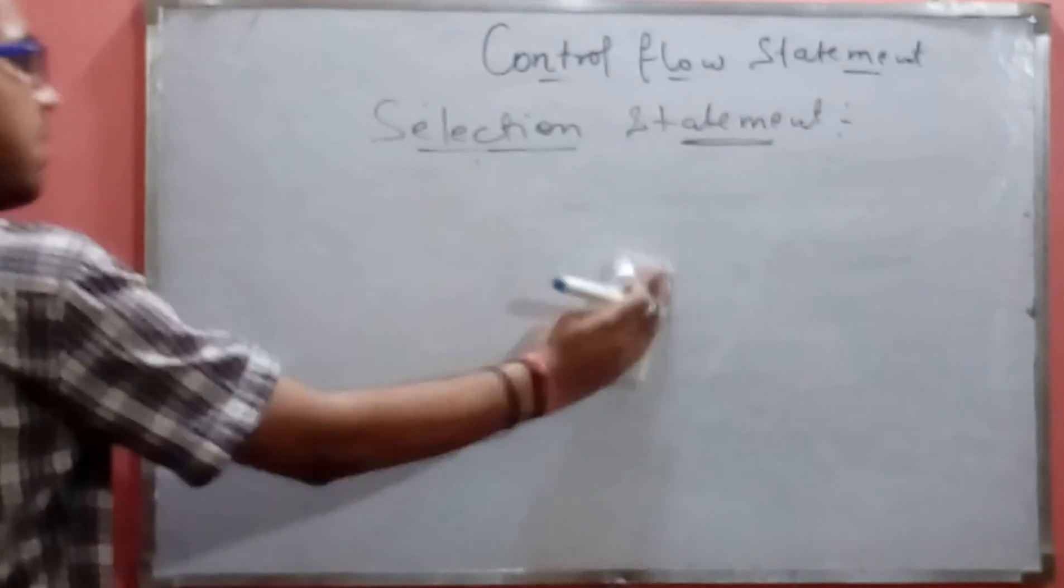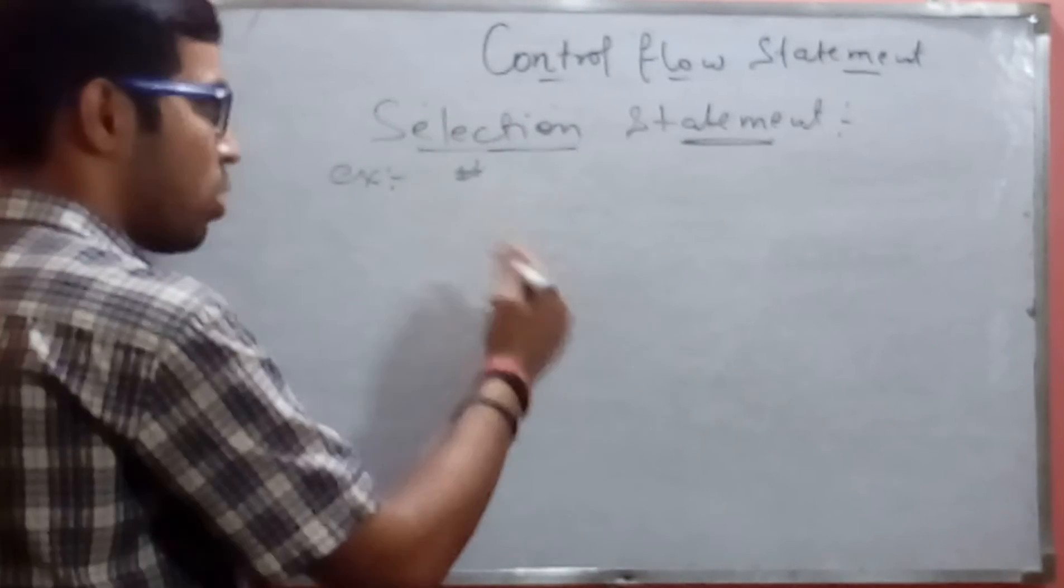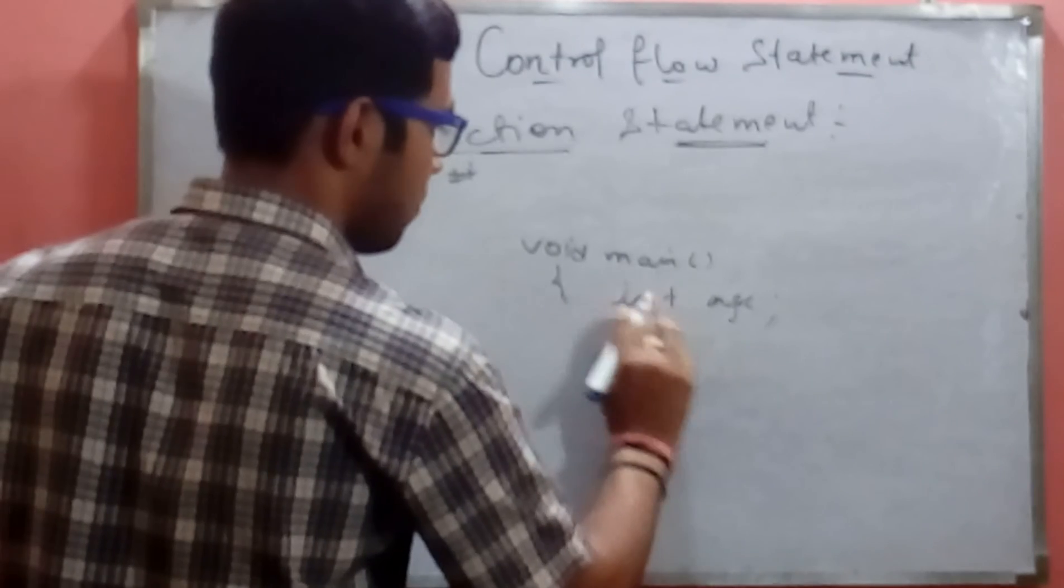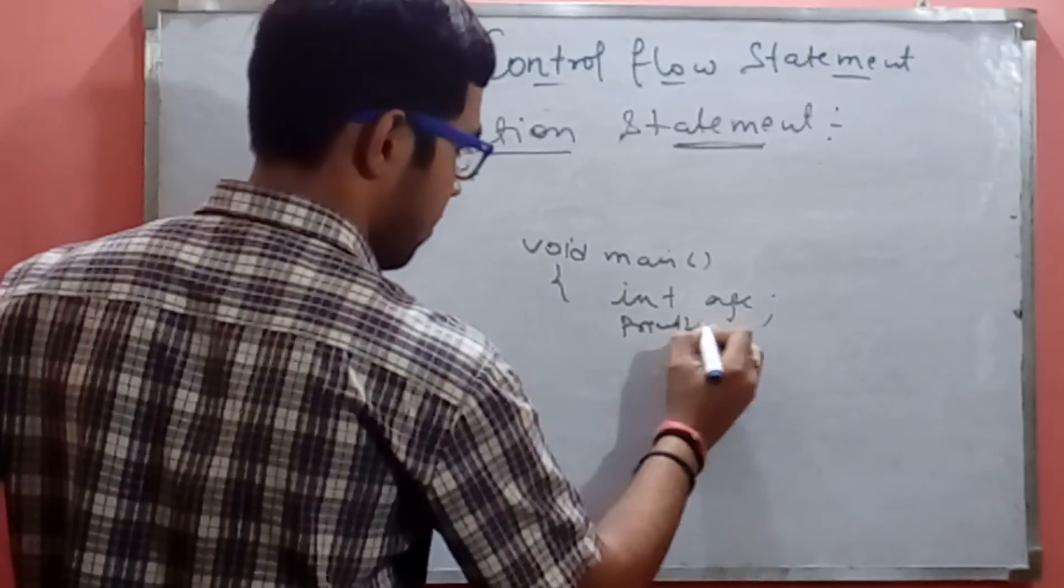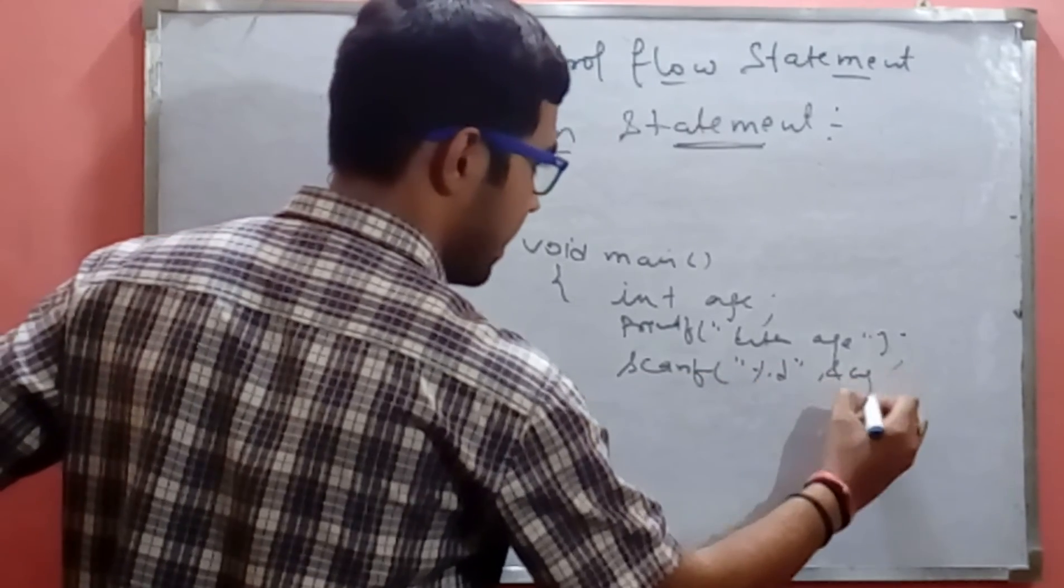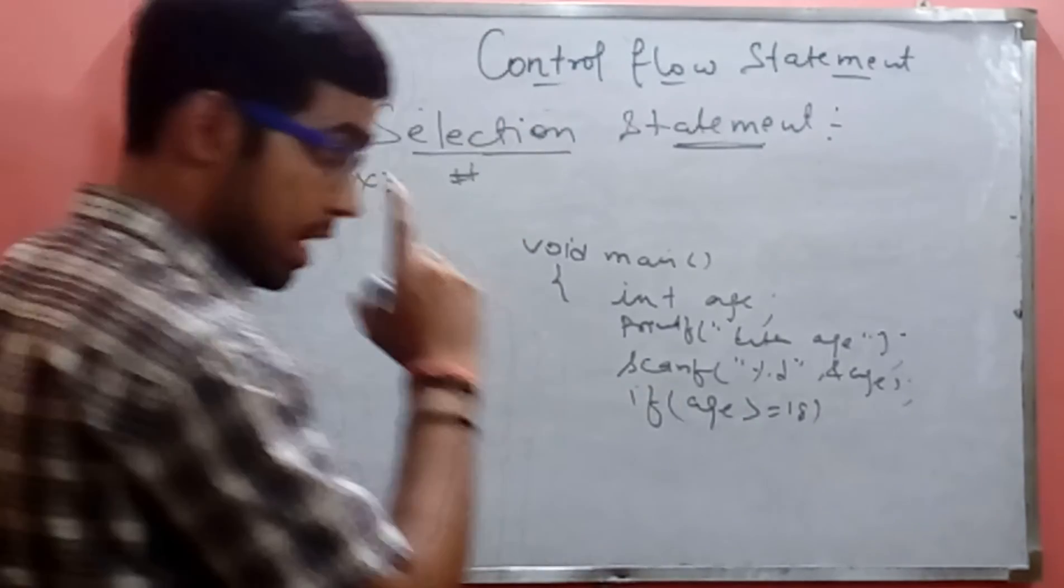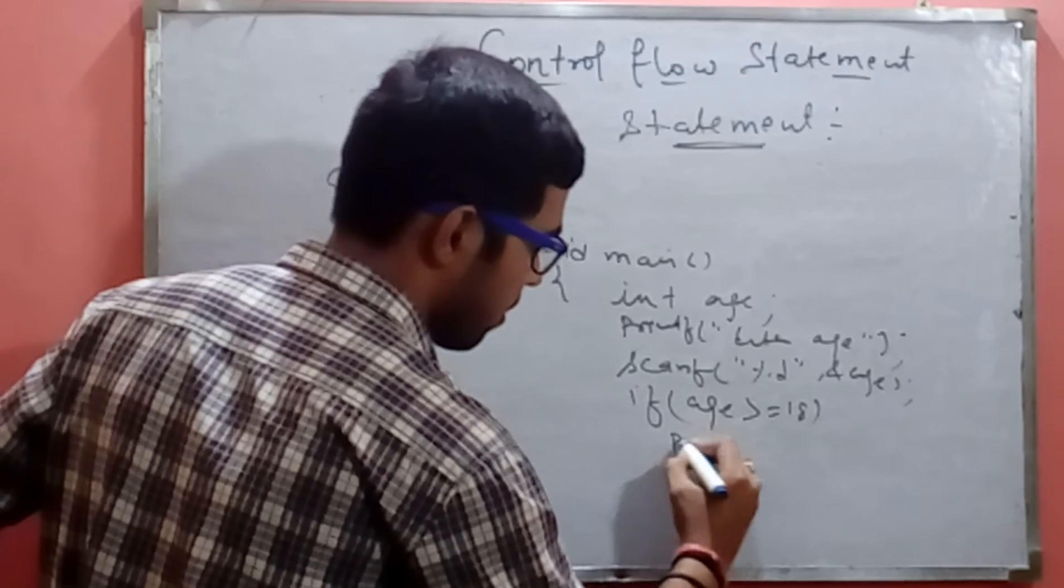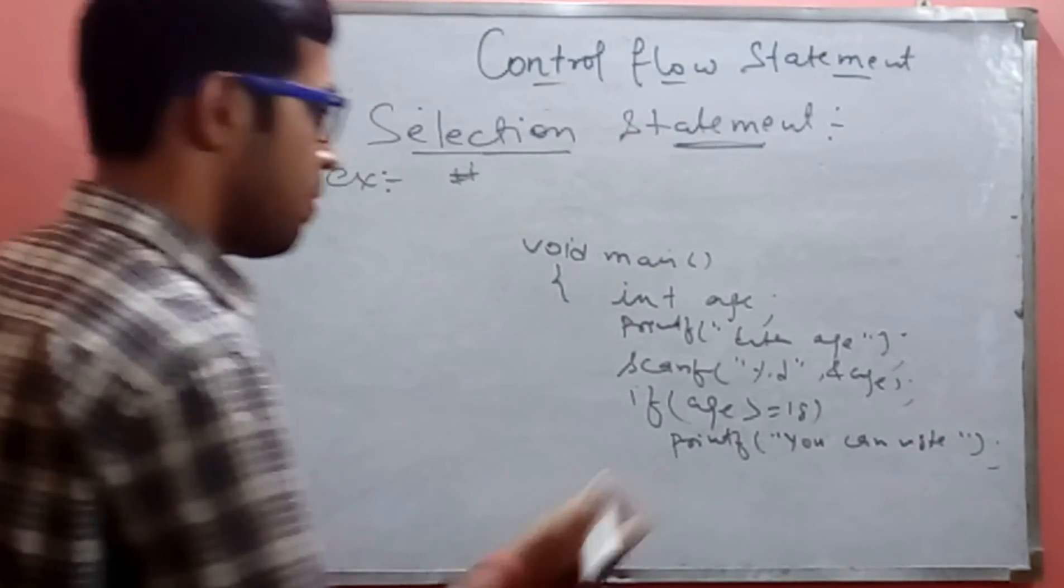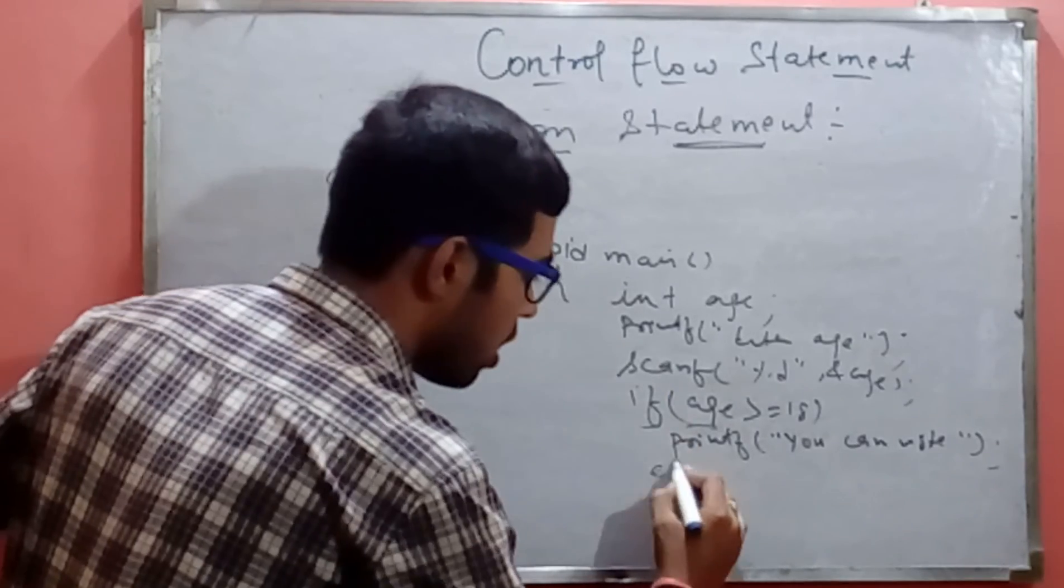Let's see the example. Include header files, void main, int age. Printf enter age, scanf percent d ampersand age. Now if condition, age is greater than 18, single statement printf. Printf you can vote if block. Now if false, if age is less than 18, we use else statement.